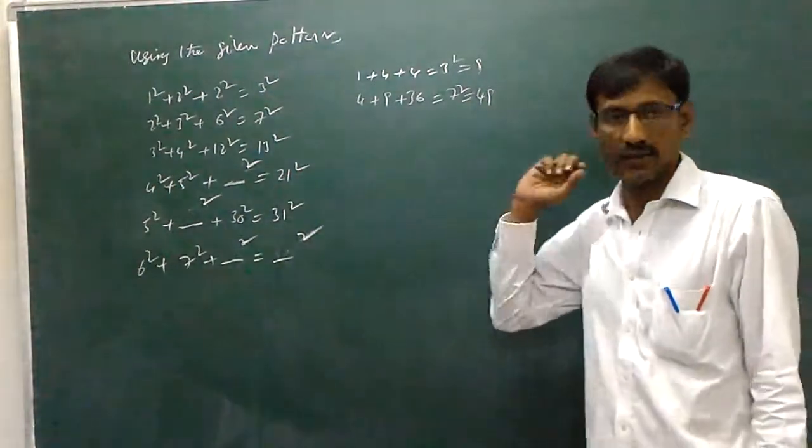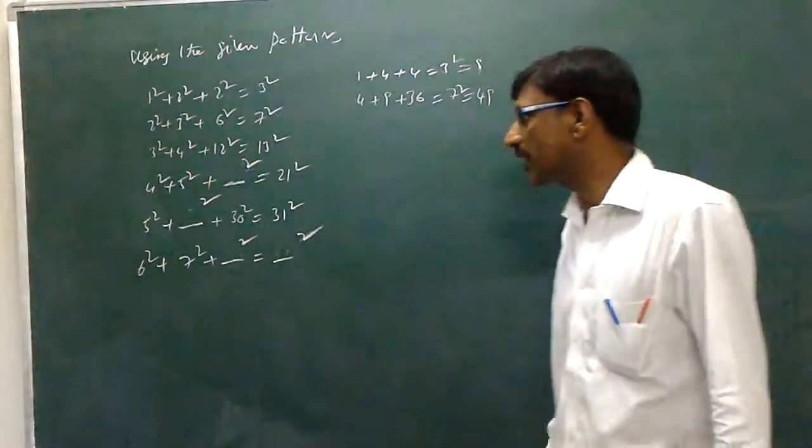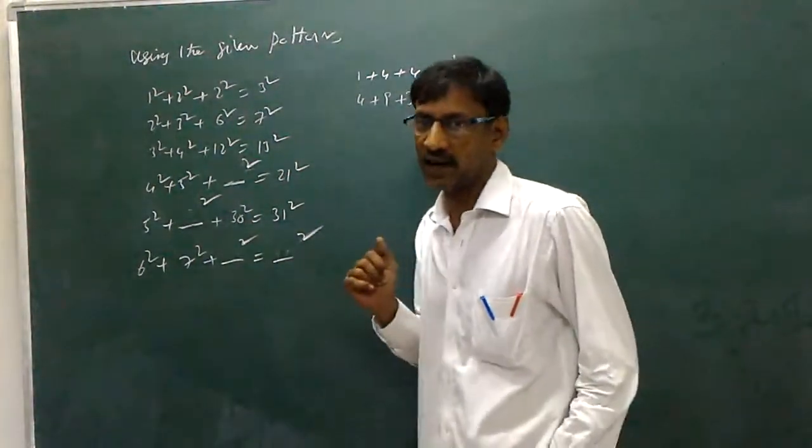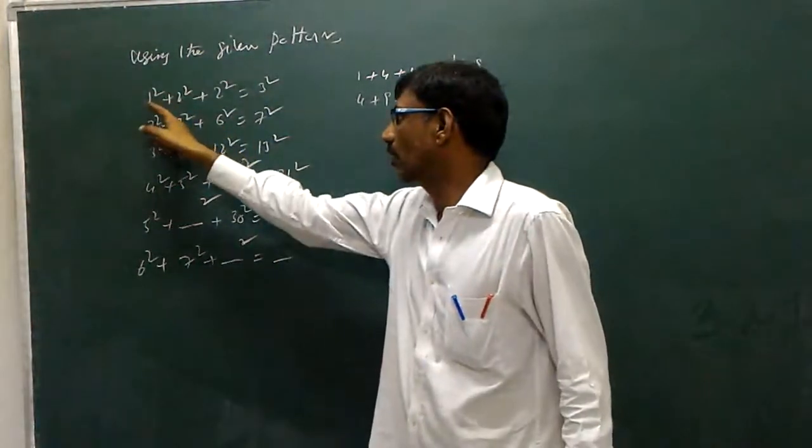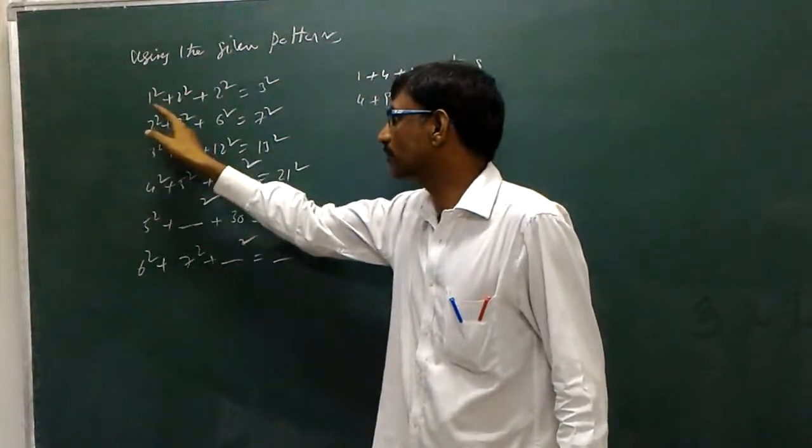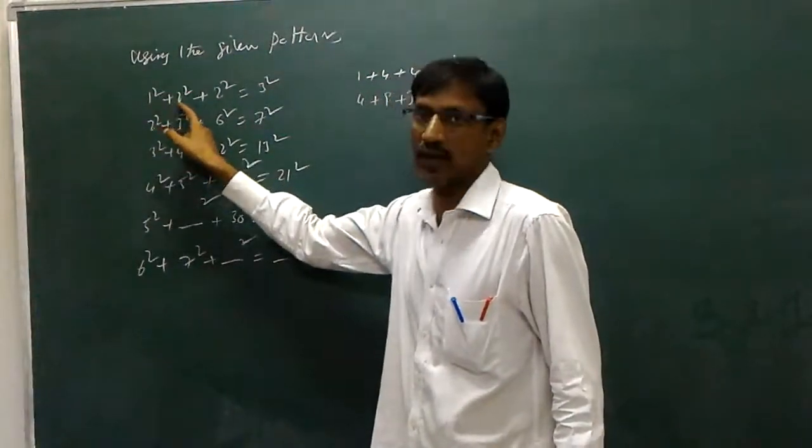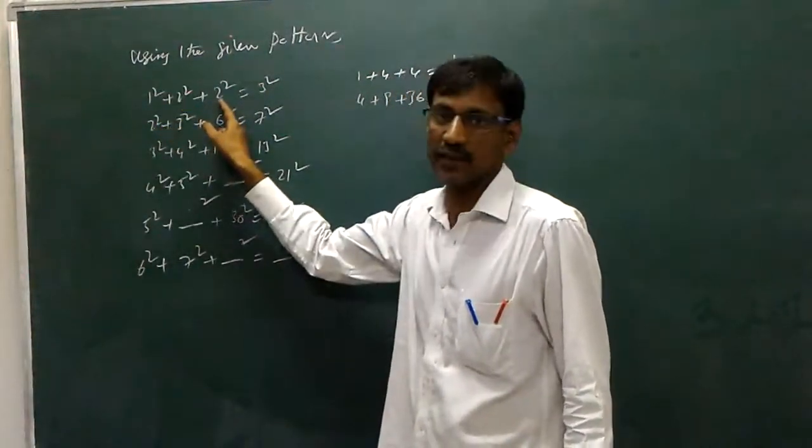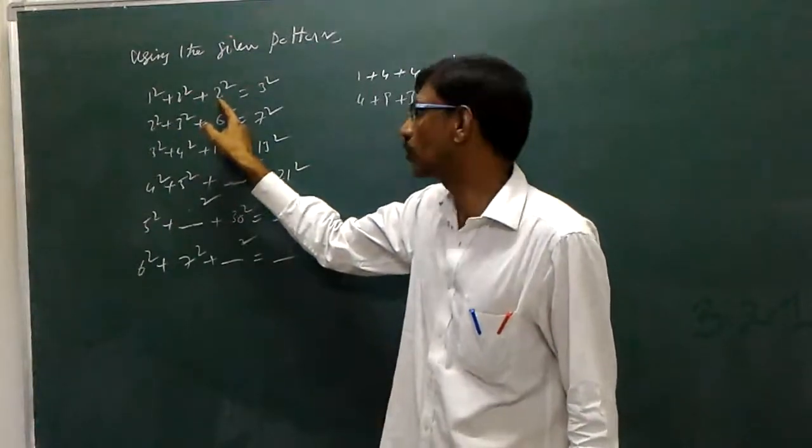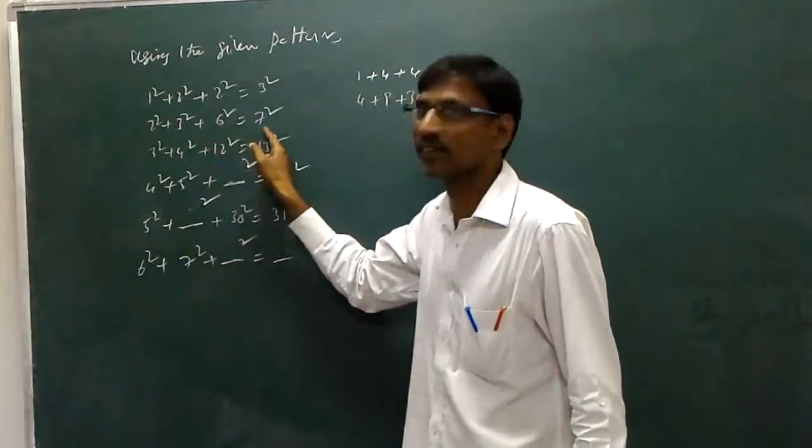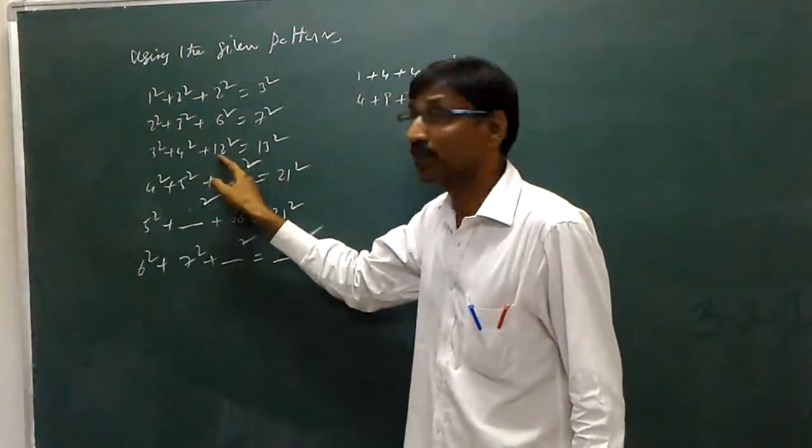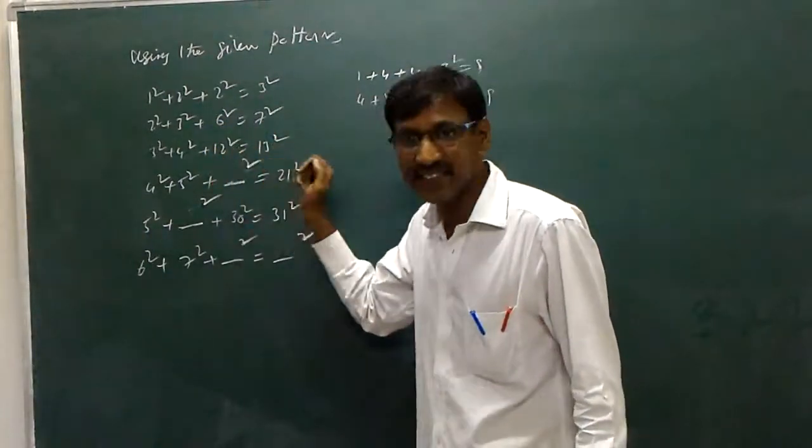Now see here. I will give an idea how to fill the remaining. One square plus two square. Again two square is given. Two plus one, how much? Three. Three square. See, six plus one, seven square. Twelve plus one, thirteen square. Do you understand?